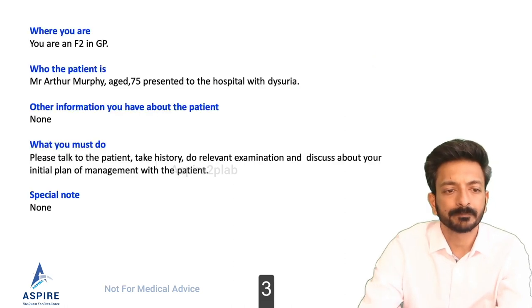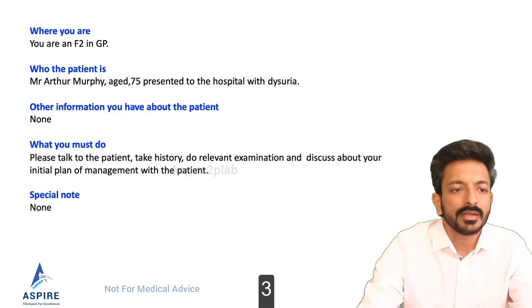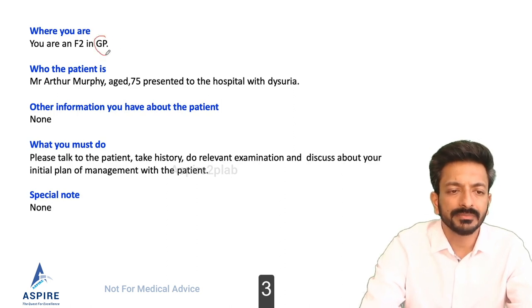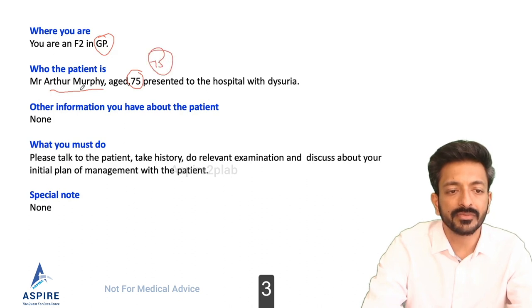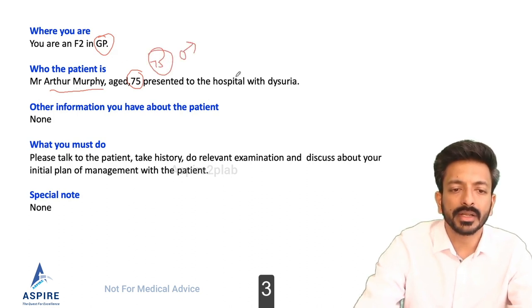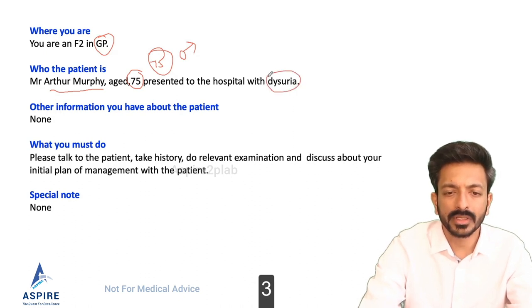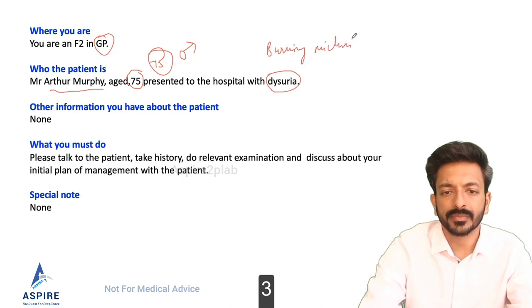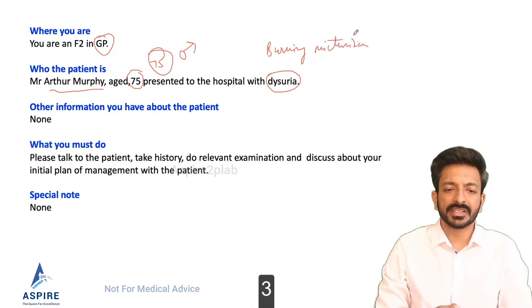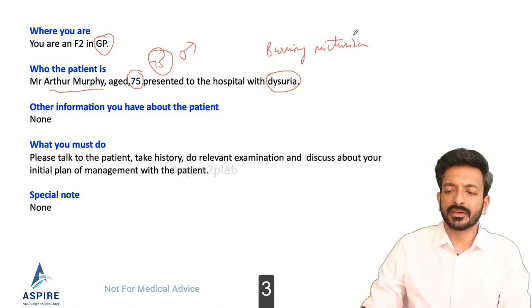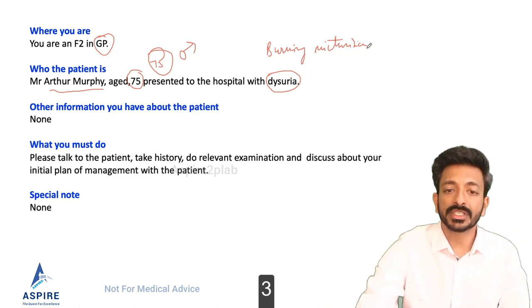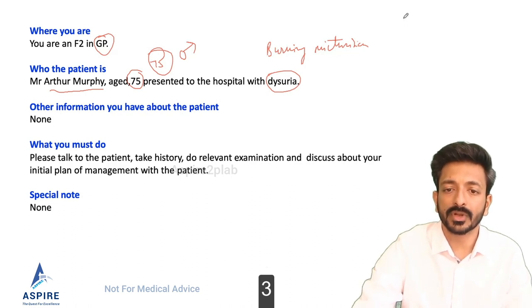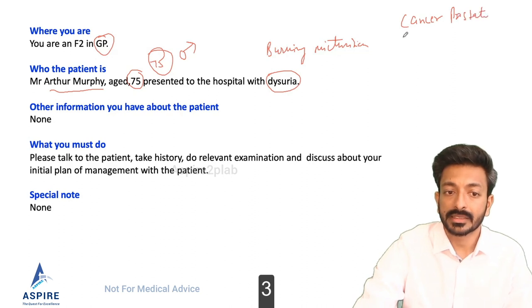Let's do surgery. We have a case: you are in a GP setting and our patient is Arthur Murphy, age 75. He presented to the clinic with dysuria, that is burning micturition. When someone 75 years old comes to us with dysuria, there are lots of things going on in our mind. First of all, cancer — maybe prostate cancer.